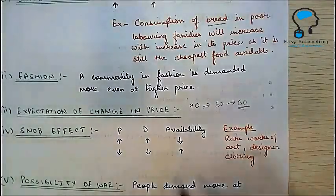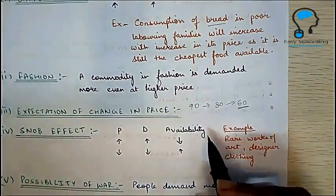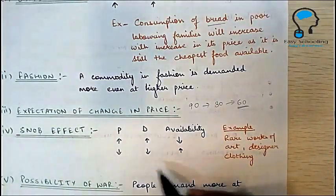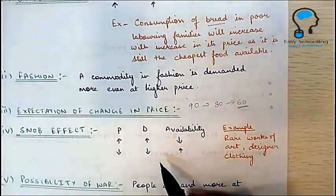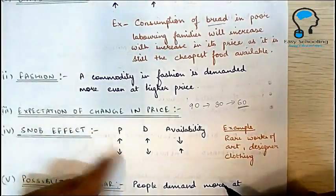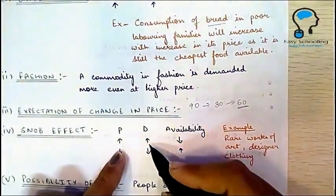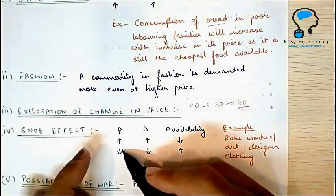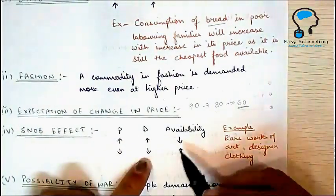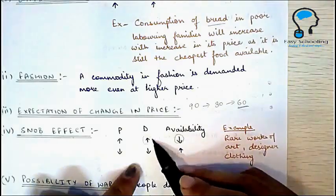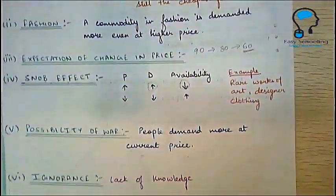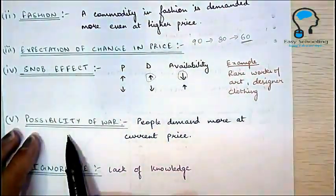The next exception is the snob effect. This applies to goods that have a usually high economic value but low practical value. Some people demand unusual or antique commodities — like rare works of art, designer clothing, or antique items. The higher the cost of those items, the more will be their demand. If their cost falls or availability increases, the demand falls.